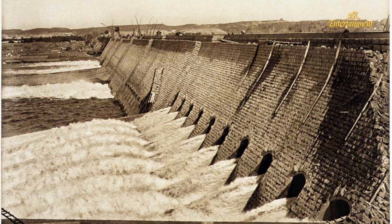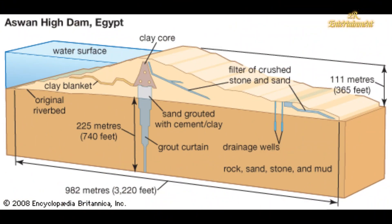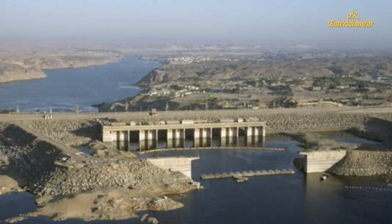The idea of controlling the Nile's flow dates back thousands of years, with ancient Egyptians building simple structures to manage the river's seasonal flooding. The Nile, with its annual inundations, was both a blessing and a curse. While it provided fertile soil for agriculture, the unpredictability of the floods often led to devastation. The concept of a dam to regulate the Nile's flow became a serious consideration in the late 19th century when the British, who controlled Egypt, sought to improve agricultural productivity and ensure a steady water supply.